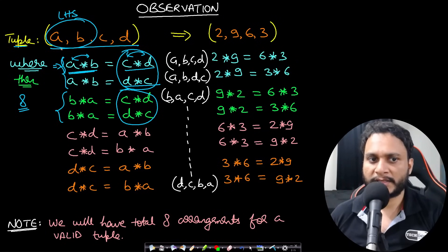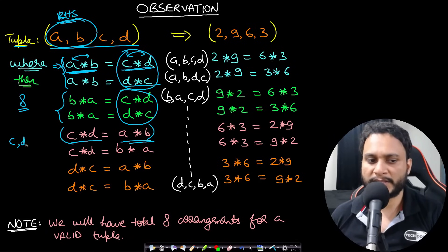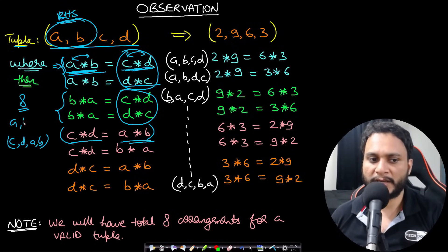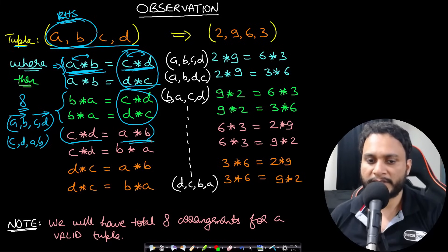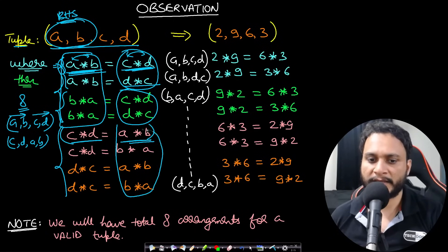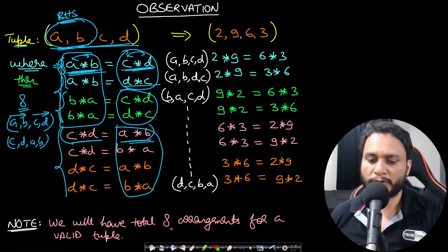Now we move a, b to the right-hand side and repeat the same process. So a, b moves to the right and c, d moves to the left, giving a different tuple: c, d, a, b — which is considered different from a, b, c, d. We always write the LHS on the left side and the RHS on the right side. That is why a×b = c×d is different from c×d = a×b. Comparing the first four and the last four arrangements, you see the LHS has moved to the RHS and vice versa. So if you have a valid tuple, you will get a total of 8 valid arrangements.